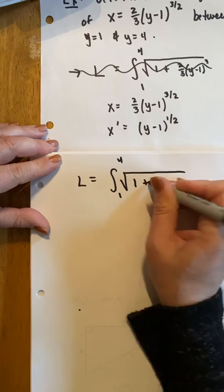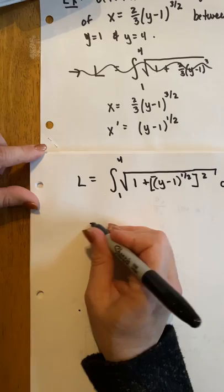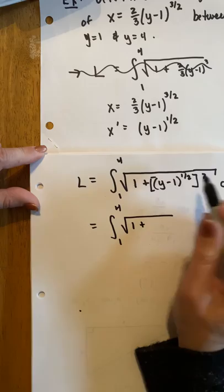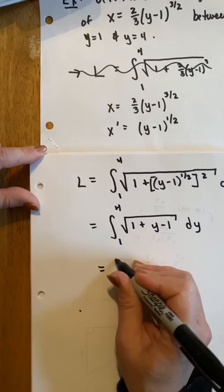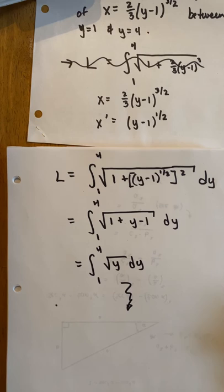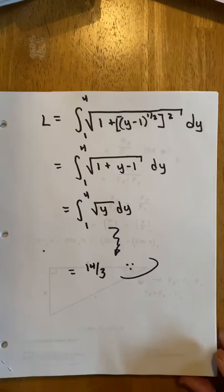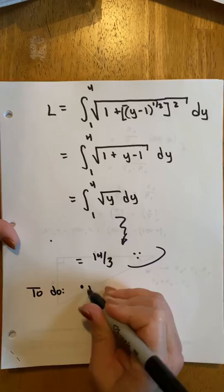So we're just going to integrate that from 1 to 4. Square root of 1 plus y minus 1 to the 1 half quantity squared dy. Look how nice this turns out. This is just 1 plus square root squared is y minus 1 dy. So we're actually just integrating 1 to 4. The square root of y dy. And we can see that our answer is just simply going to work out to be 14 thirds. So be sure to work out the details. You know, keep practicing your integration. Especially if you plan on taking calc 3 in the fall.